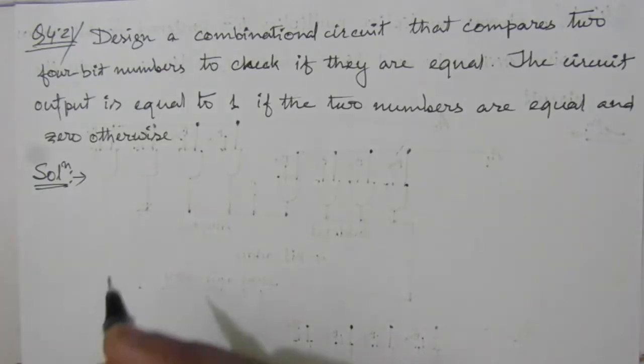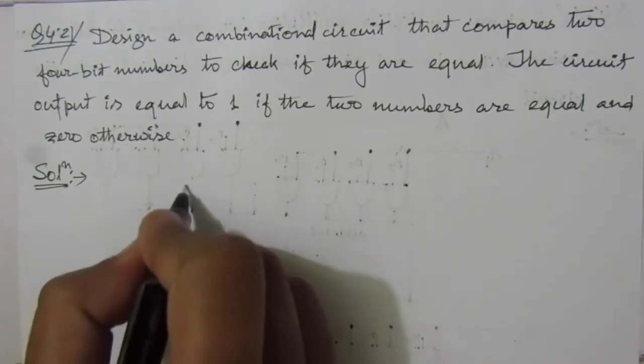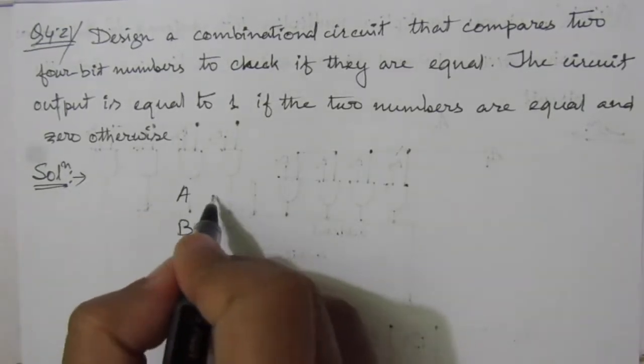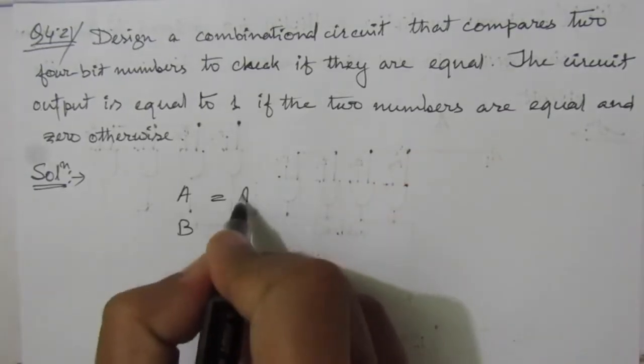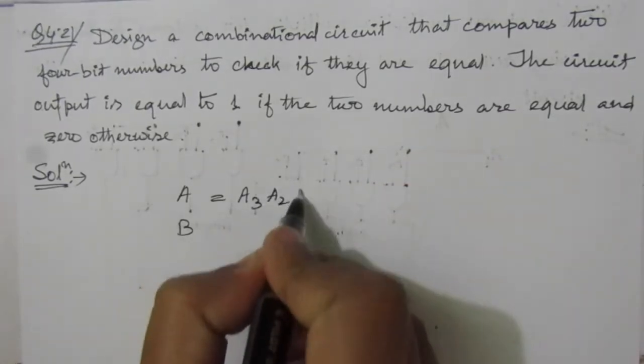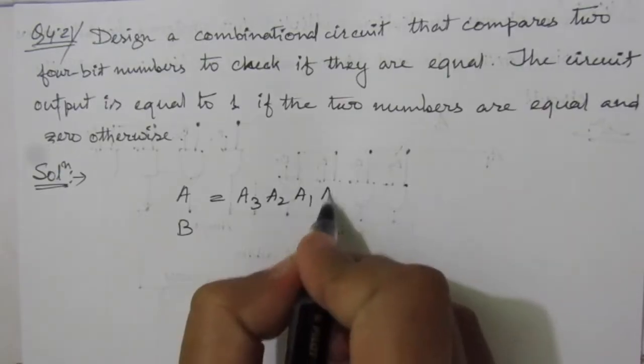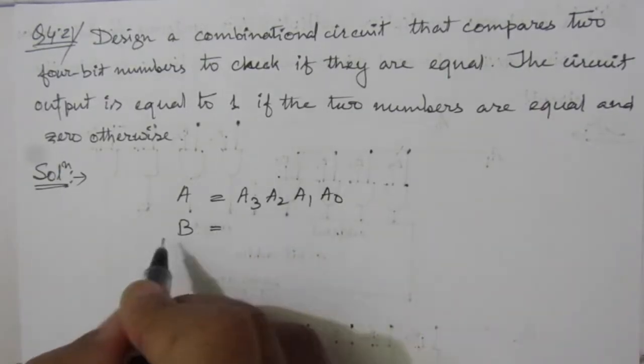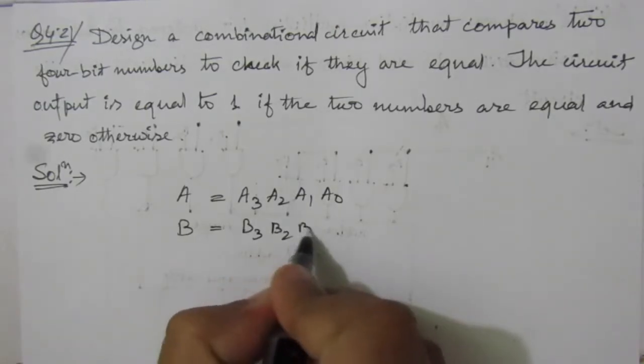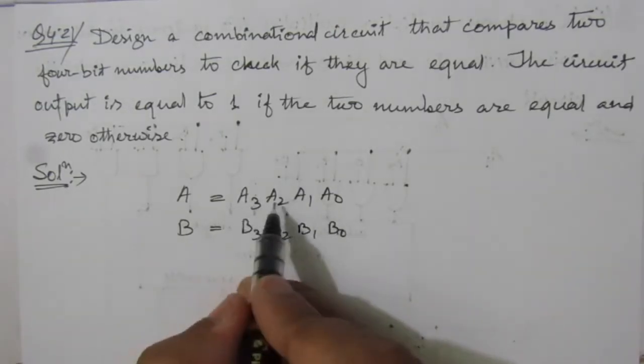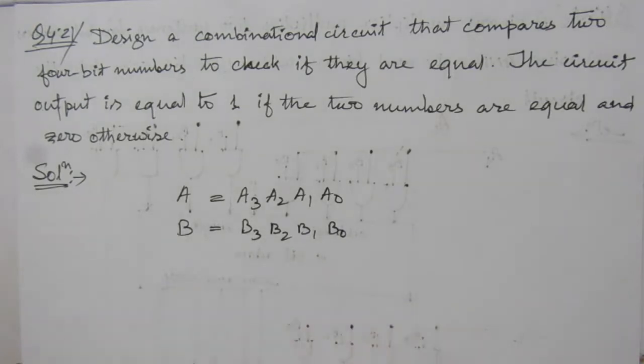Now let us consider two numbers, A and B. Because it is a 4-bit number, we will assume that A is equal to A3, A2, A1, A0, and B is B3, B2, B1, B0. These are the 4-bits for each number.